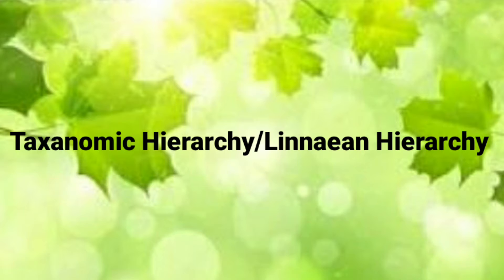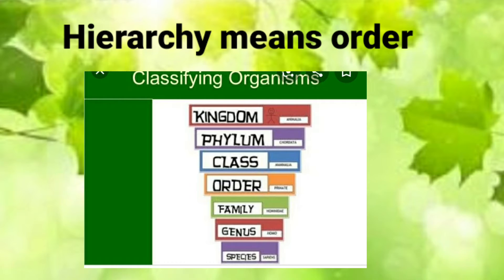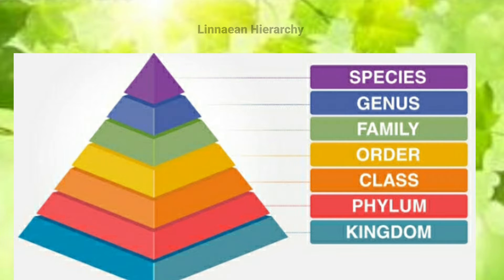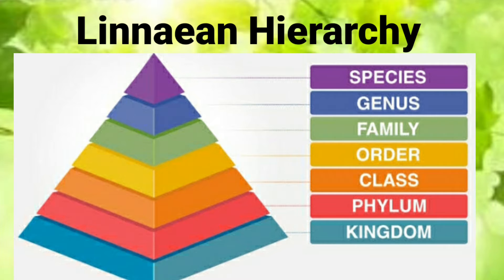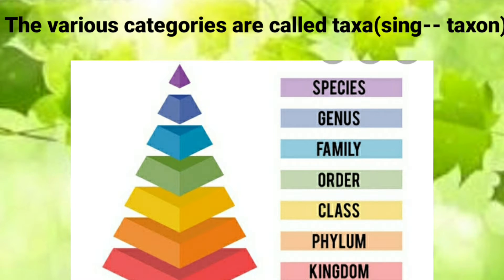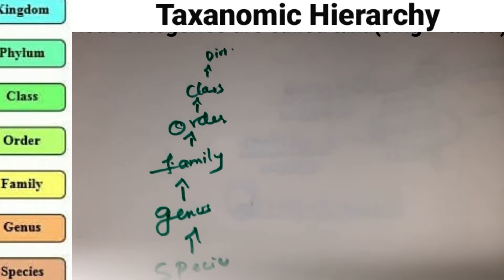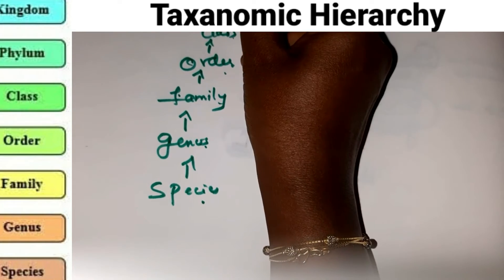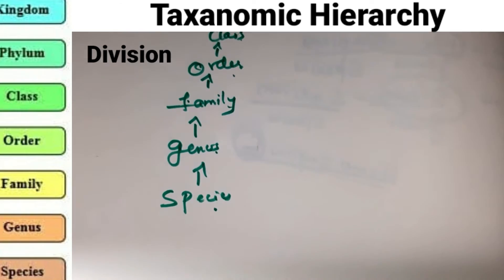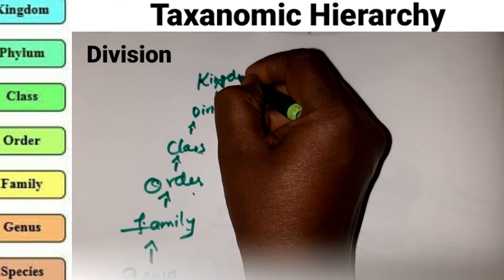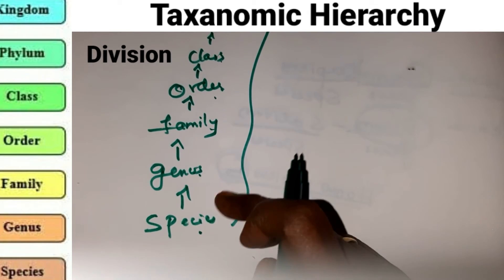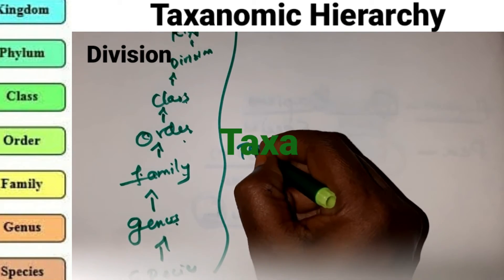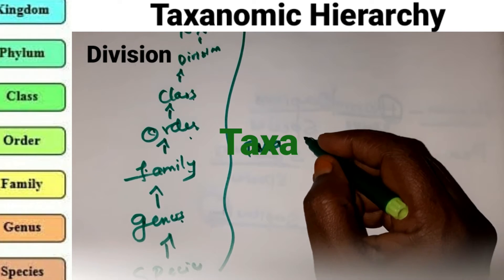Now we shall see taxonomic hierarchy, also called Linnaean hierarchy. Hierarchy means order. Linnaeus arranged the various categories used in classification one above the other, and this hierarchy is called the Linnaean hierarchy. The various categories are called taxa (singular: taxon). Each higher taxon includes many lower taxa. The categories are: species, genus, family, order, class, division, and kingdom.